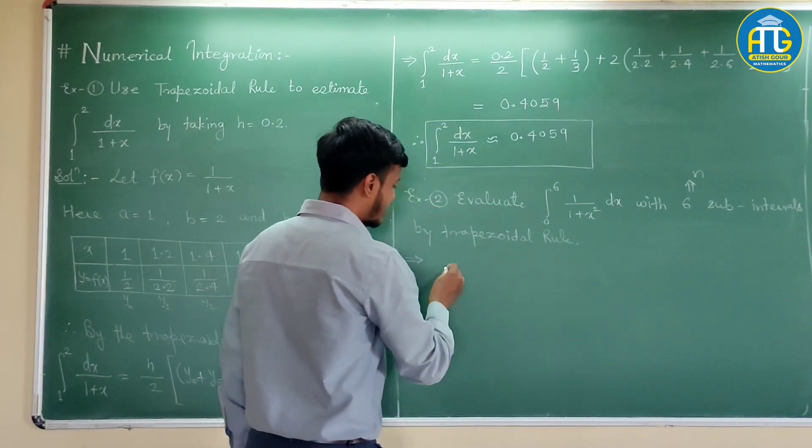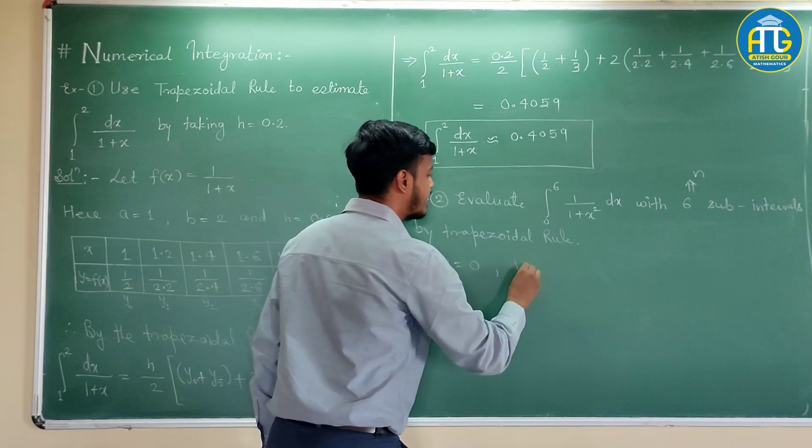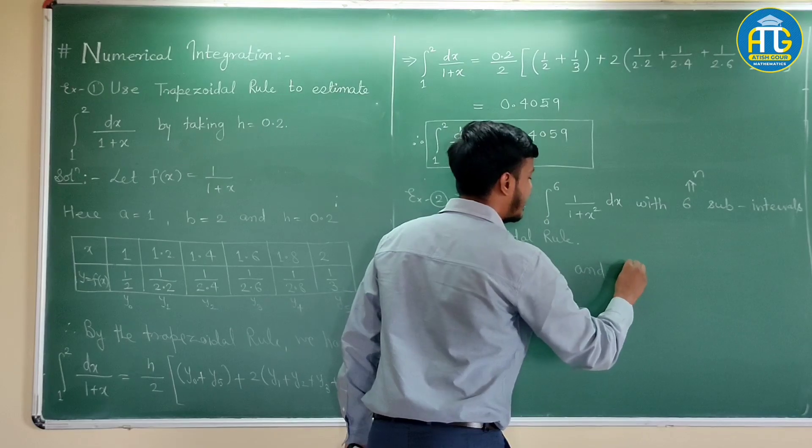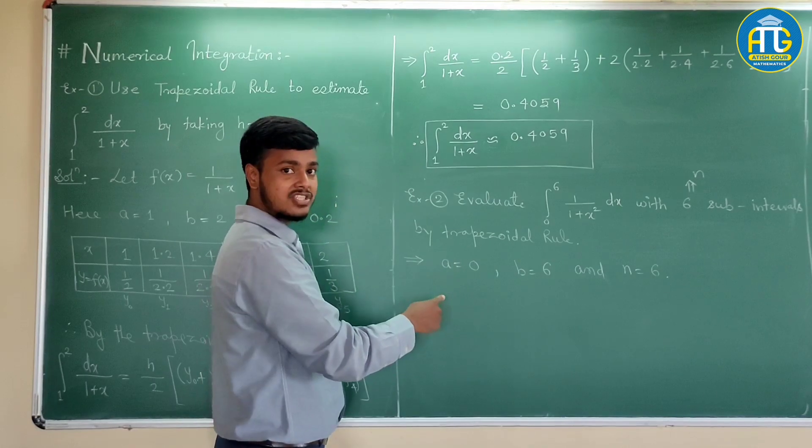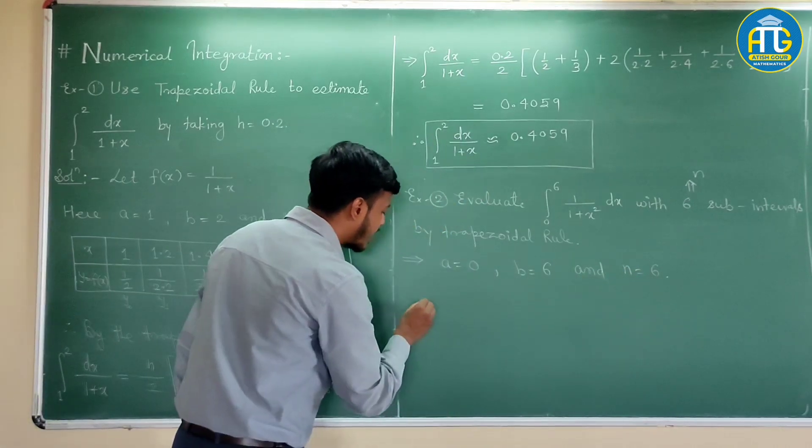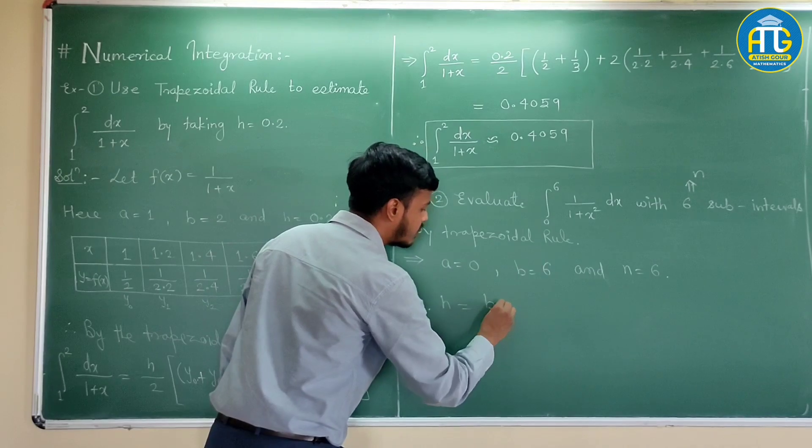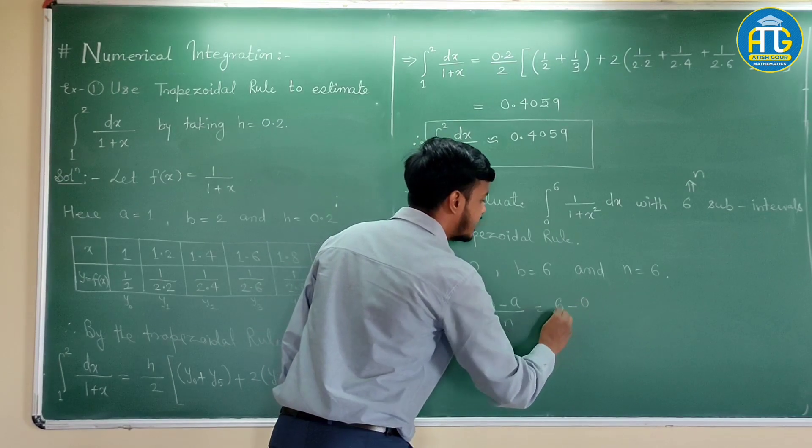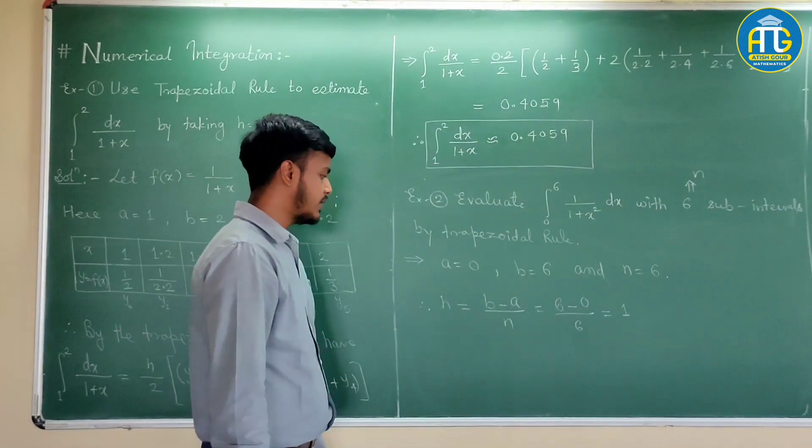What you can do here is, you have the limits. What is a? A is 0. What is b? B is the upper limit 6. And what is n? Here, n is equal to 6. We can find out the value of h that is the interval of differencing with the help of this. Therefore, the interval of differencing that is h can be found out by b minus a by n. What is b? 6, a is 0, n is 6. So, this comes out to be h is equal to 1.